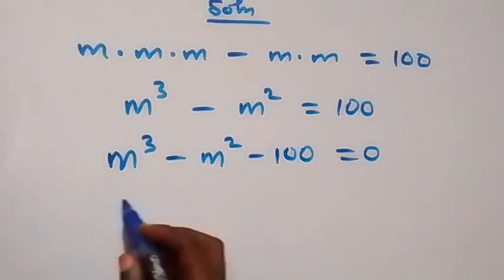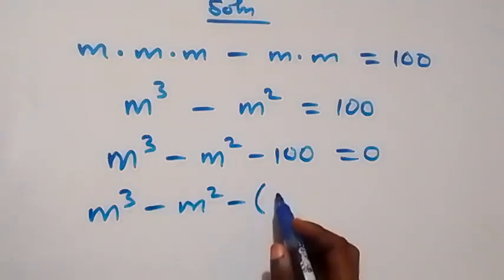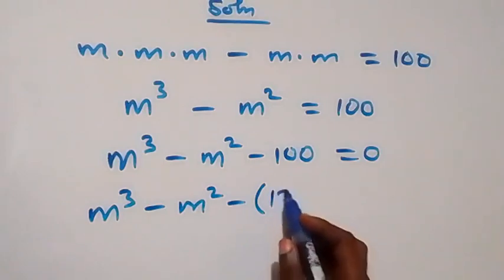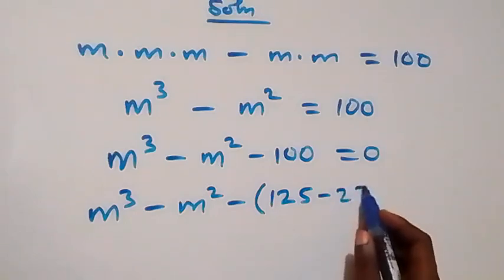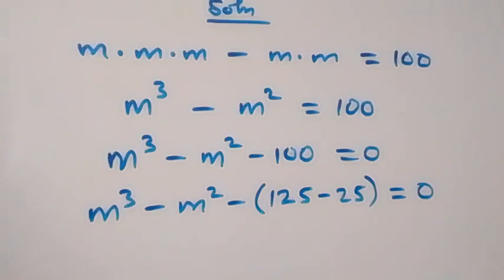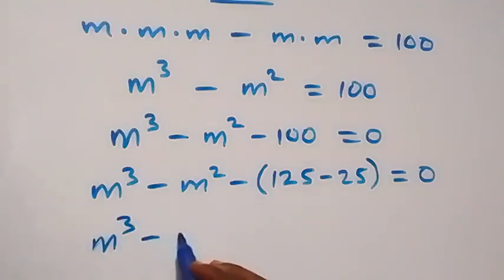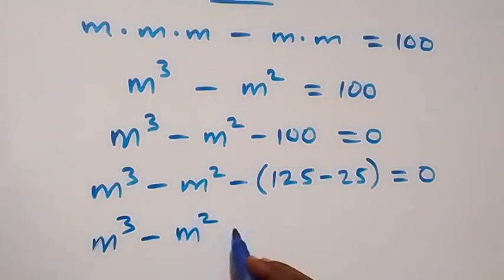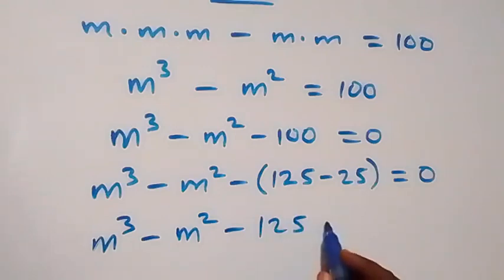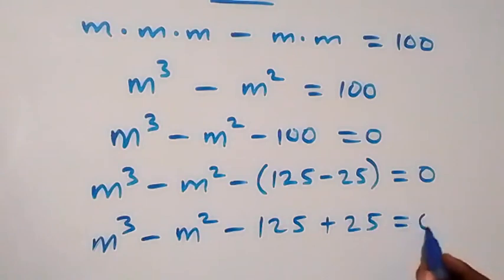We can also write this as m raised to power 3 minus m squared, then minus 100 written as 125 minus 25, equals zero. We use this minus to open the brackets, and this becomes m raised to power 3 minus m squared minus 125 plus 25 equals zero.